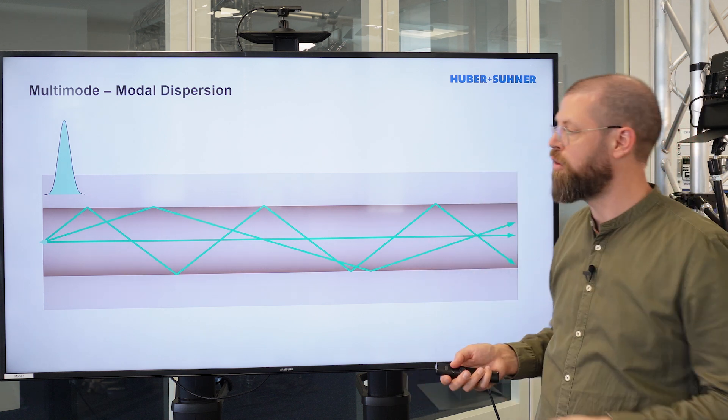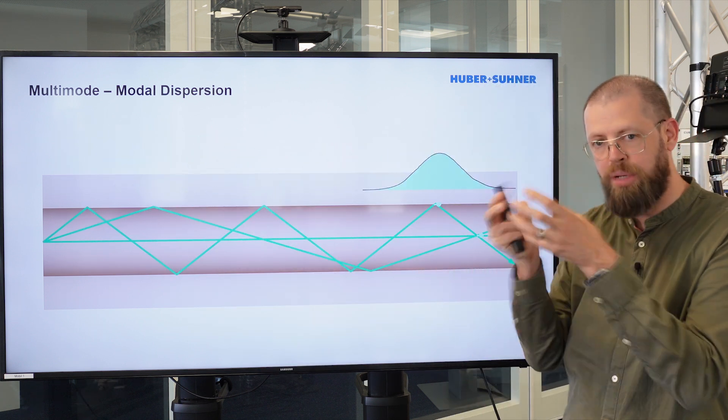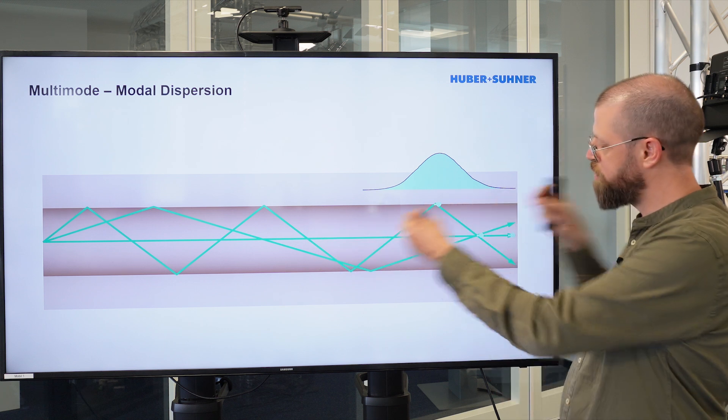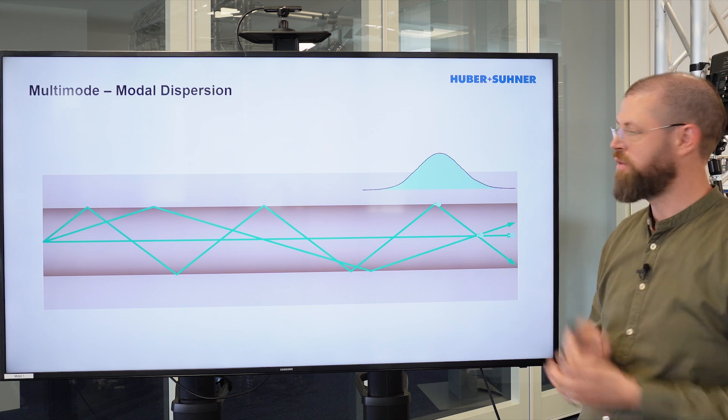Because the light takes these different modes, it will end up spreading, because that same pulse signal will be spreading apart and arriving at the same part of the fiber cable at different times.